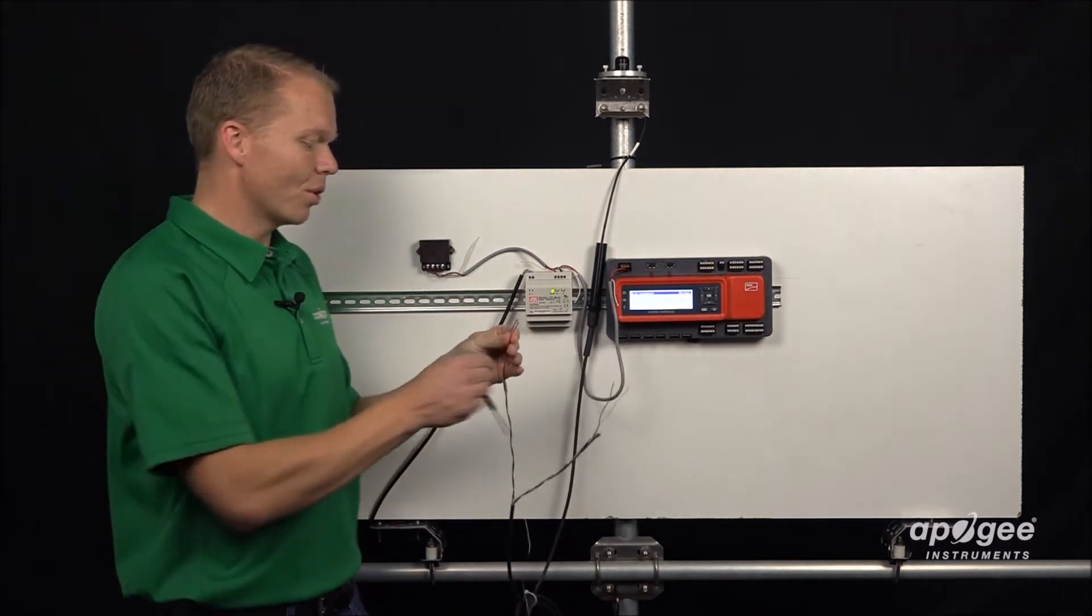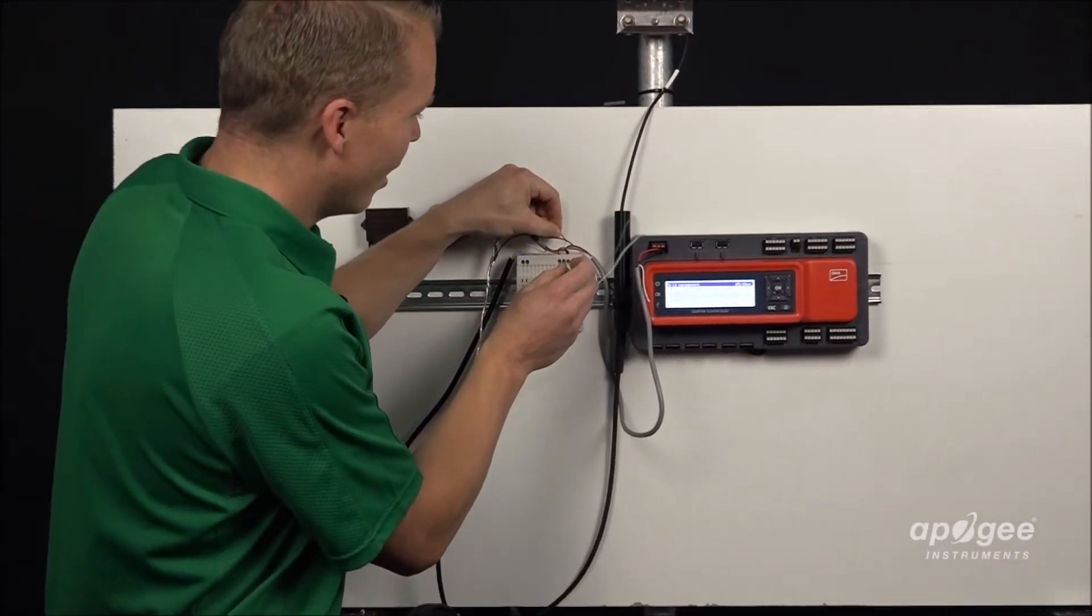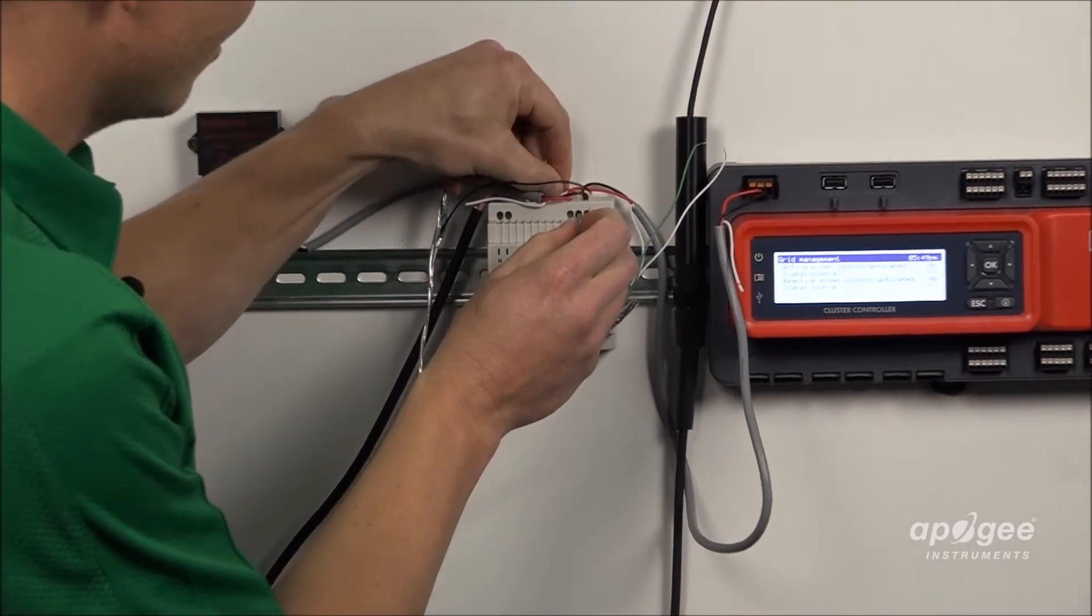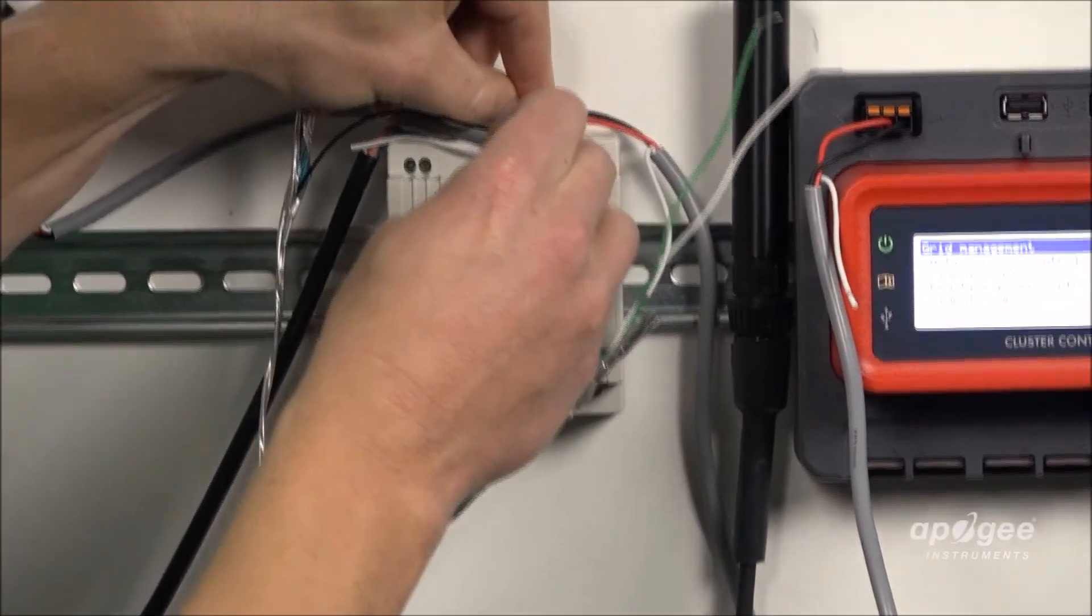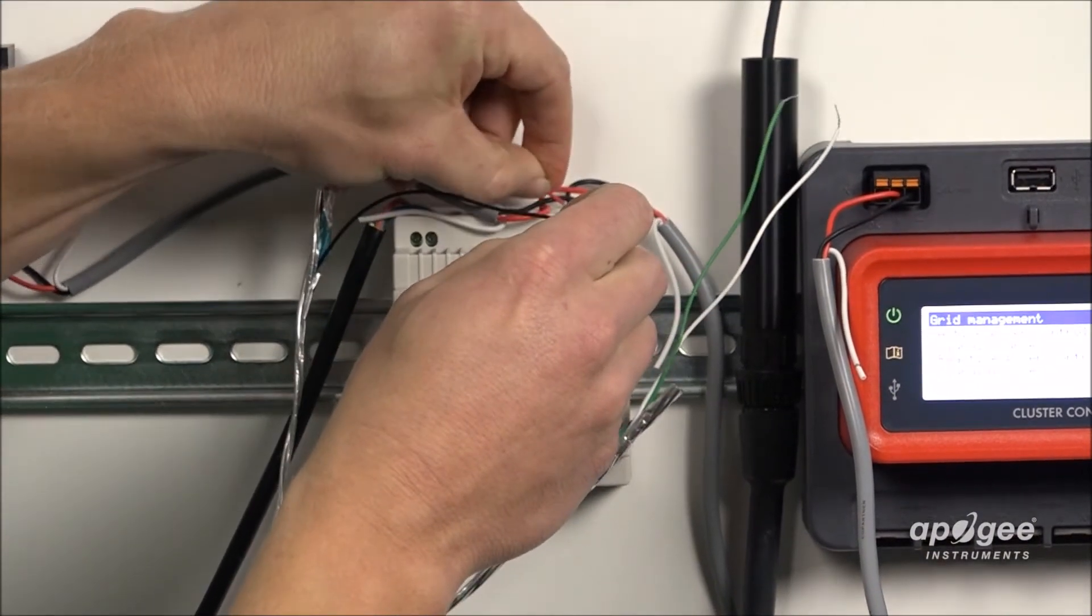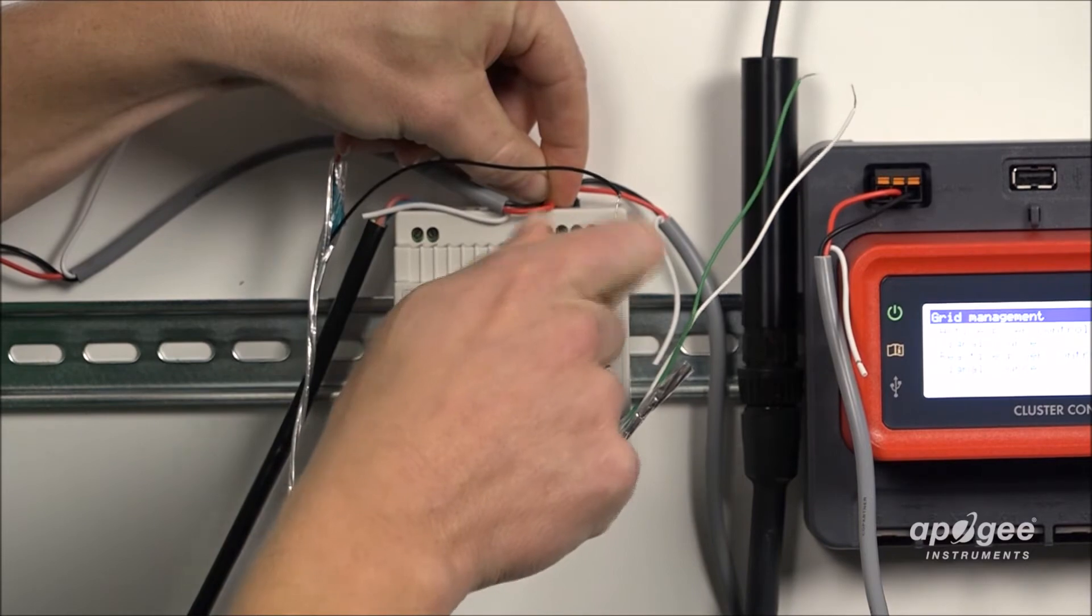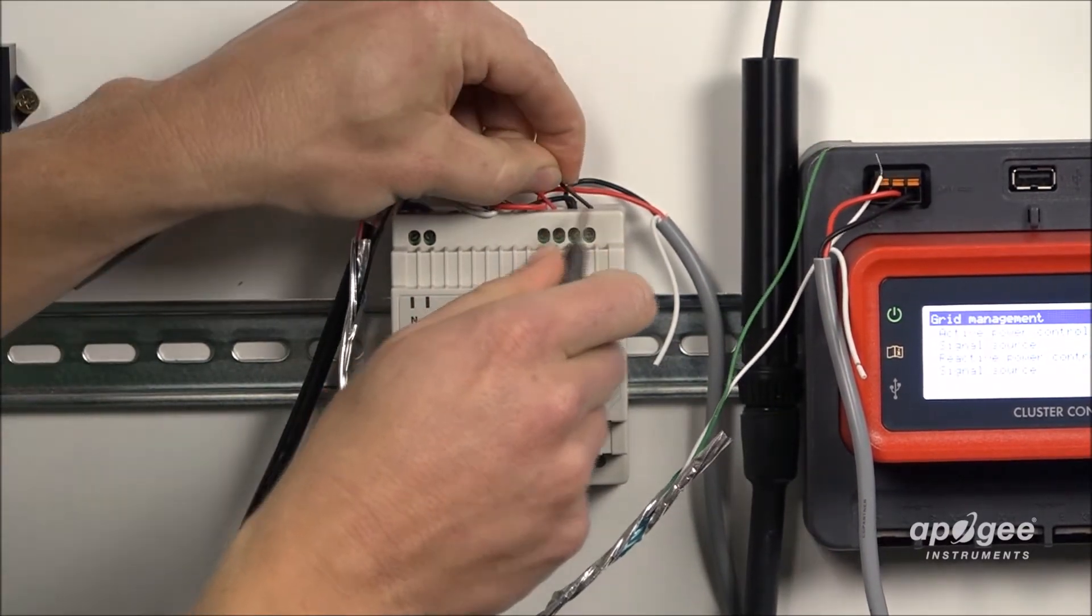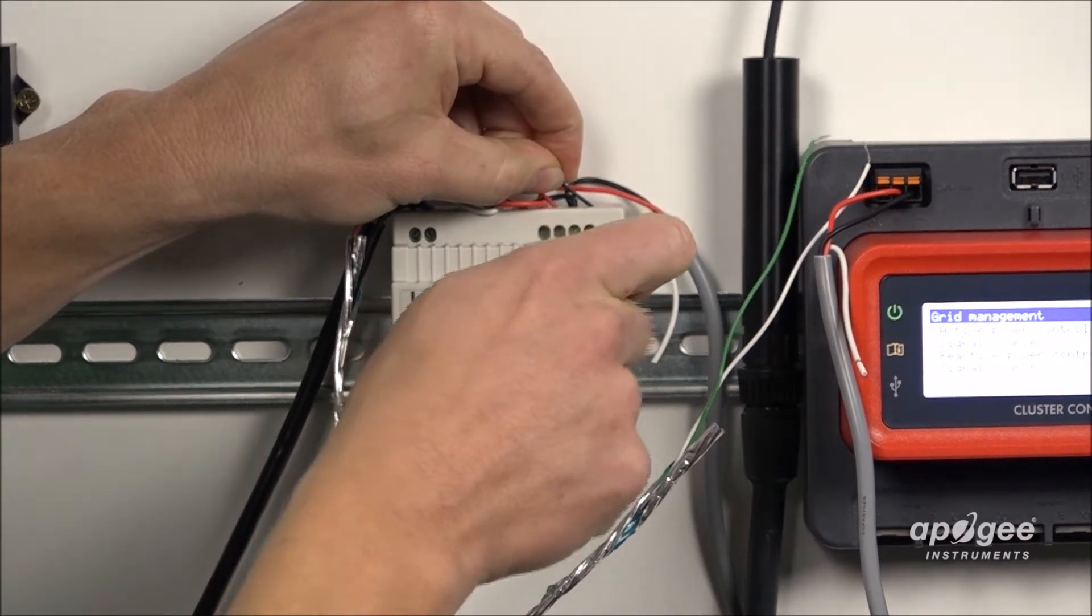We'll go ahead and in our example connect the red into the positive on the power supply, slide that down in there. This is just a regular screw on terminal so we will slide it in and tighten that down and then the black will go in the negative and same thing we will tighten it down.